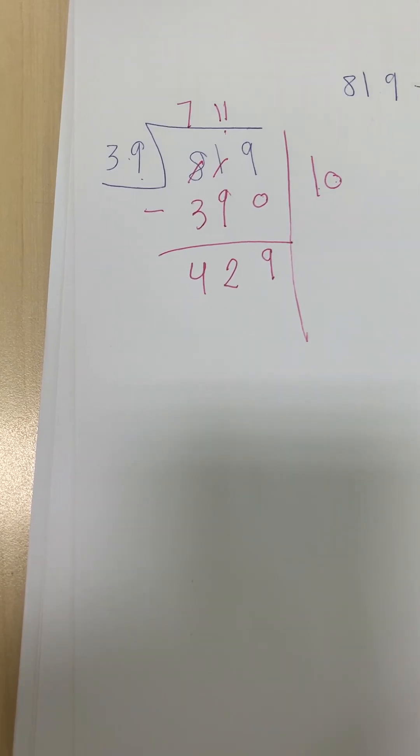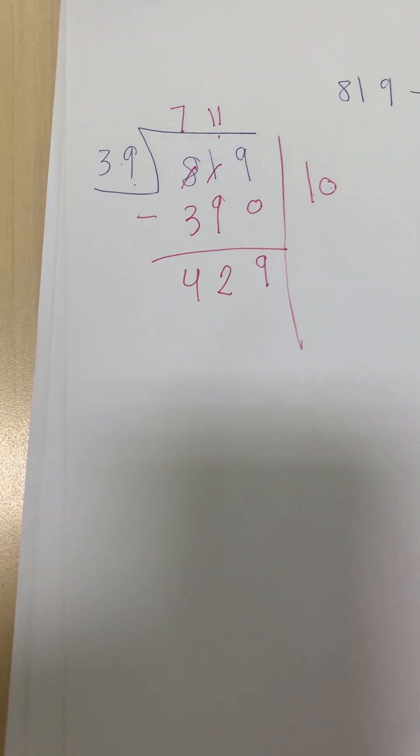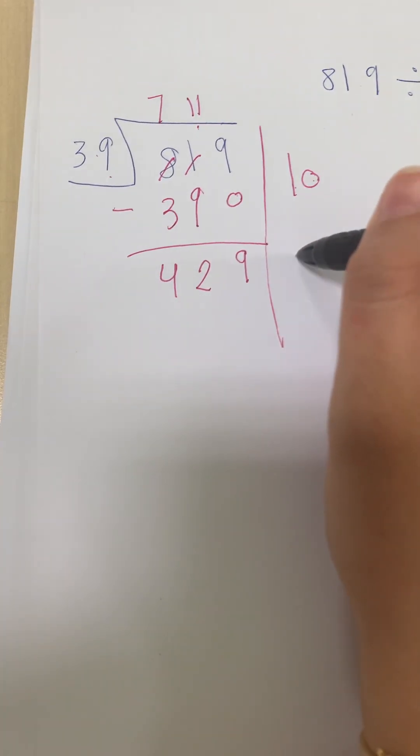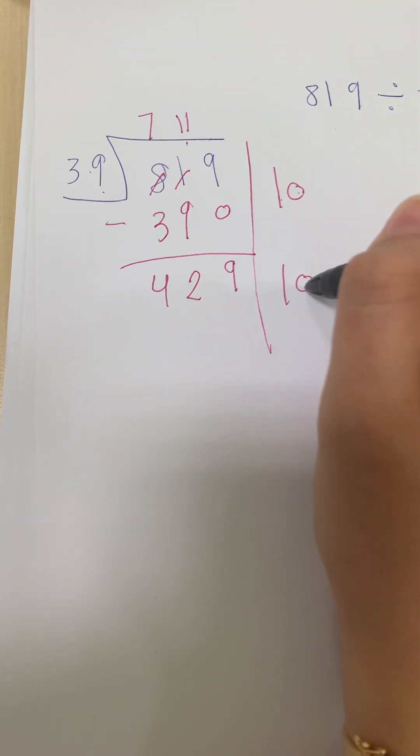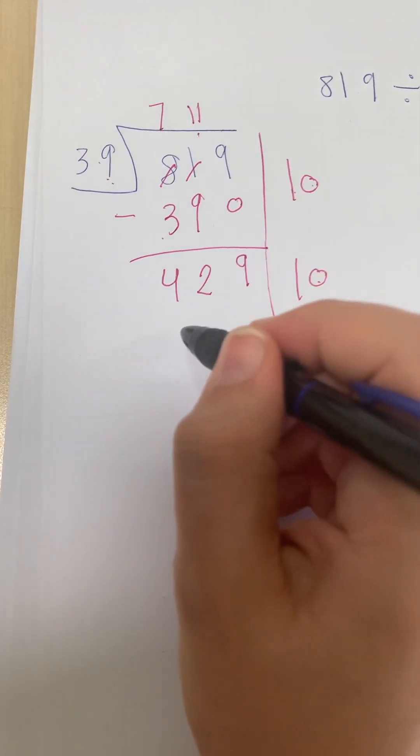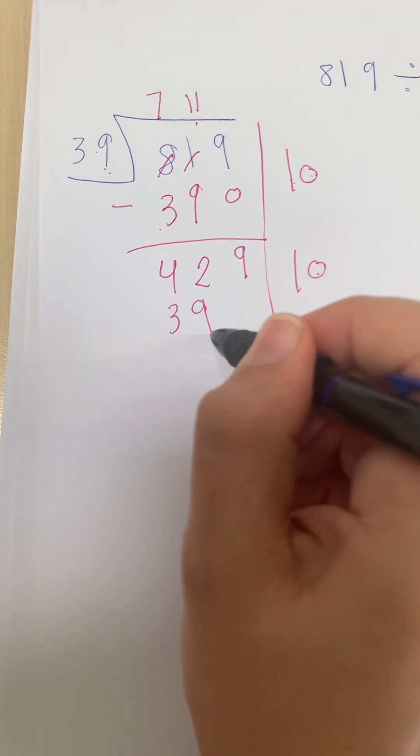Now I have 429 left. I will put 10 again. 10 multiply 39 is what? 390.